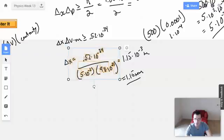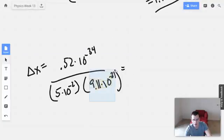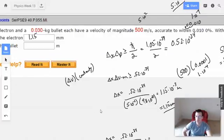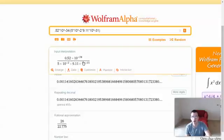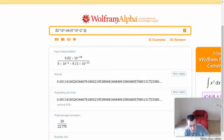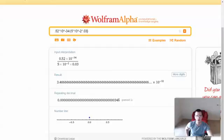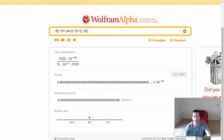Now I'm going to do the exact same thing for the bullet. Copy and paste. For the bullet it's 0.03. We're dividing by a much larger number, so this should be small. 3.47 times 10 to the negative 32nd.